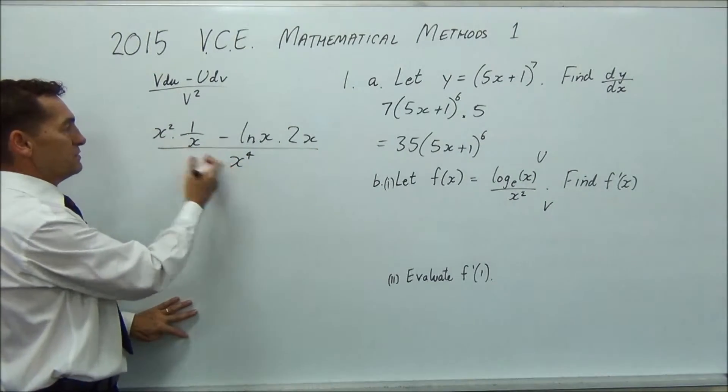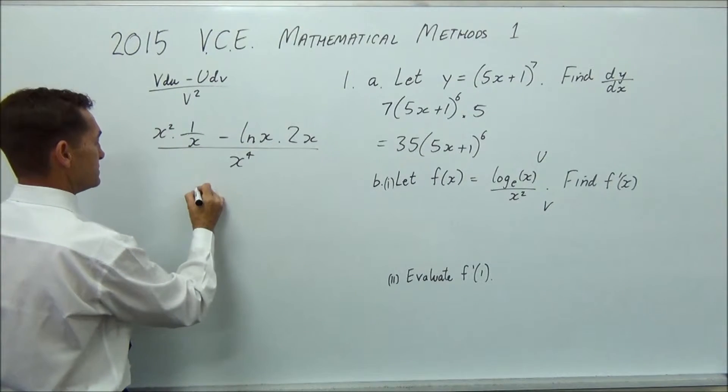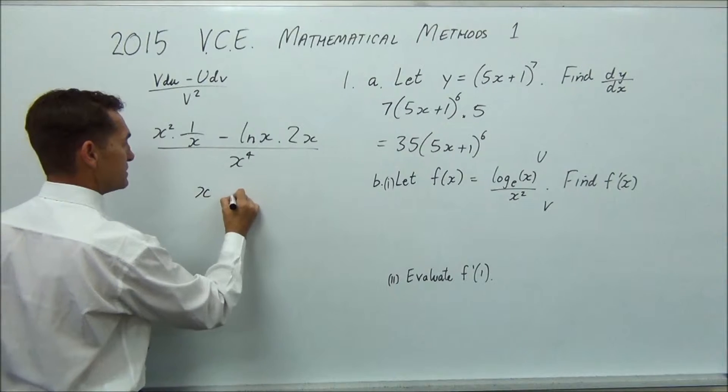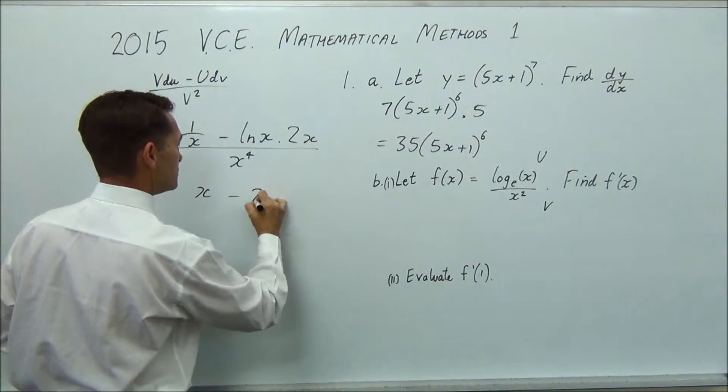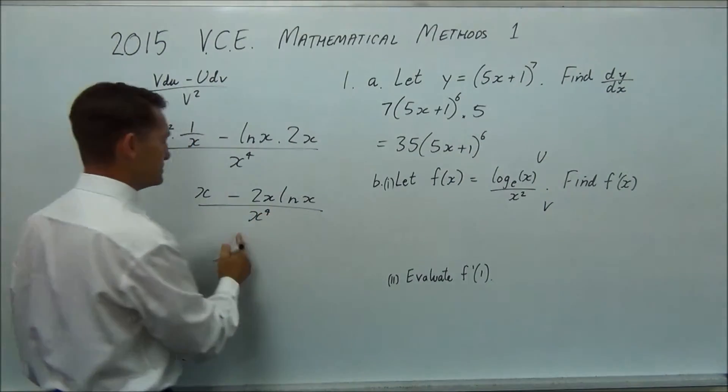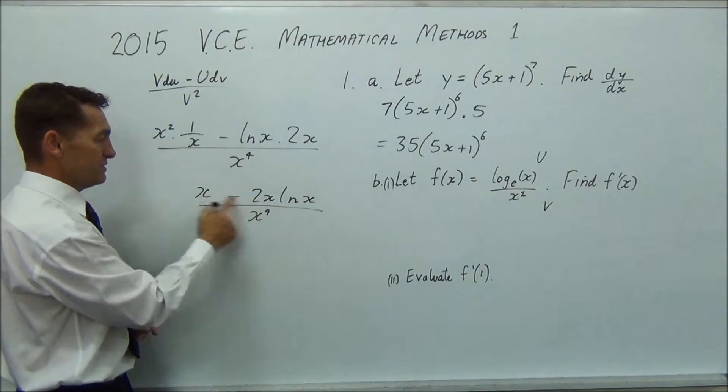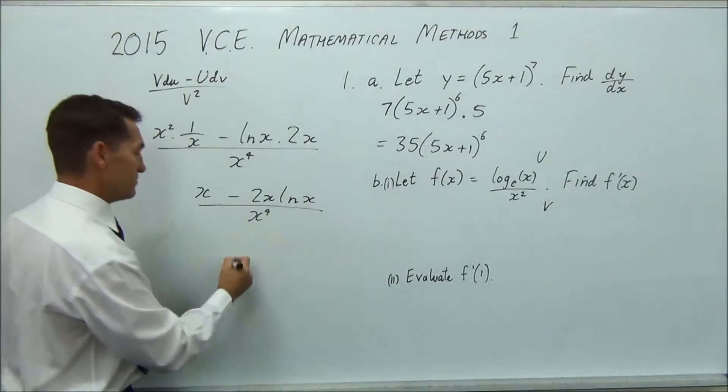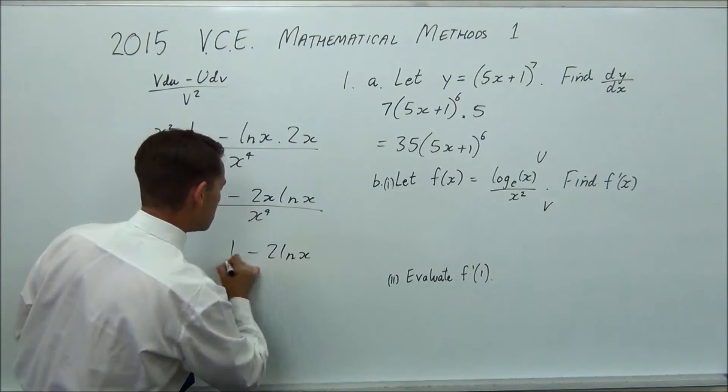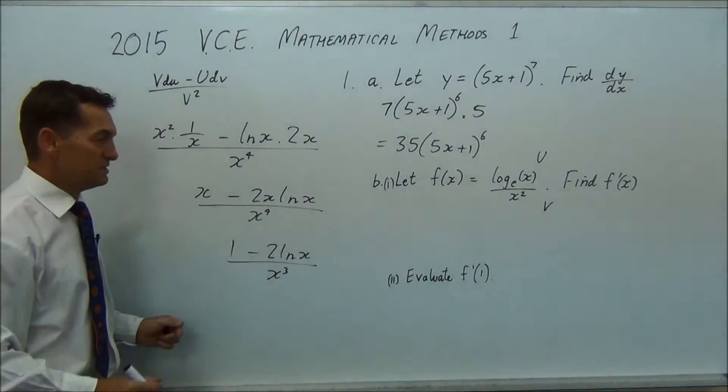So you can knock off things that are common, but there isn't going to be a lot common if we simplify this a little bit. x squared over x is just going to be x minus 2x log x over x to the 4. So one of the x's will knock out in each spot, so one there, one there, that'll become a 3. So we'll get 1 minus 2 log x over x cubed and you're done.